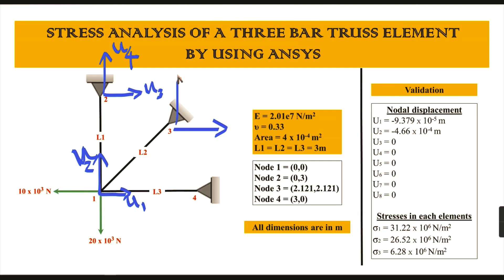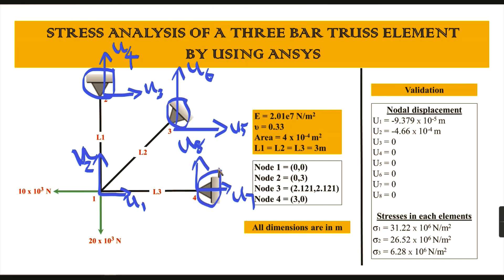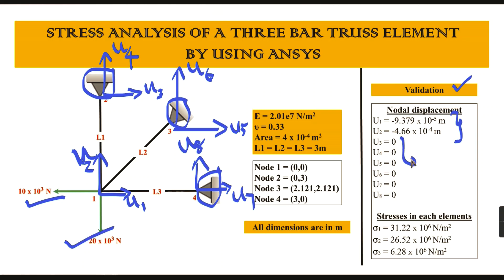Node four has displacements U7 and U8. So in total we have eight displacements acting in the three bar truss element. We already know that where nodes are fixed, the displacement is zero. The load acting on node one in the x direction and y direction will give non-zero values for U1 and U2, while all other displacements U3 through U8 are zero because those nodes are fixed.